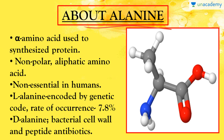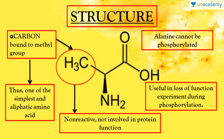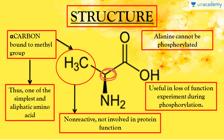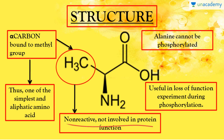D-alanine is present in the bacterial cell wall, peptides, and also in some peptides of antibiotics. This is Adolf Strecker, the person who first synthesized alanine in 1850. Looking at the structure of alanine, you can see the alpha carbon atom bound to a methyl group, making it one of the simplest aliphatic amino acids.